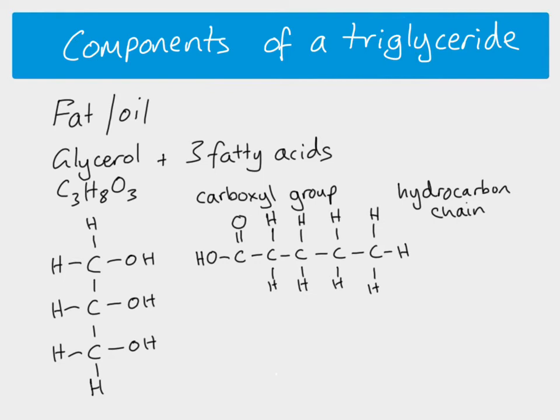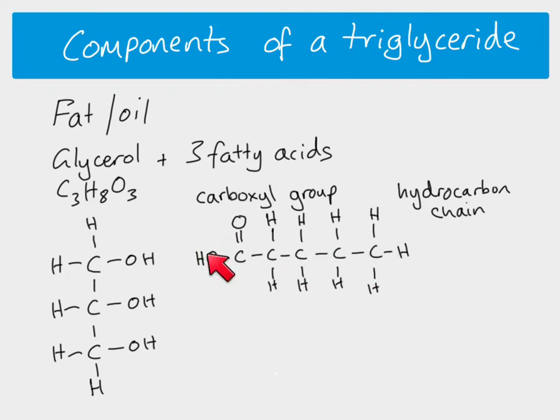The hydrocarbon tail varies from fatty acid to fatty acid. There are about 70 different fatty acids and they all vary both in the length of their hydrocarbon chain and in whether there are single or double bonds. This part varies, but the carboxyl group is always the same in every fatty acid.